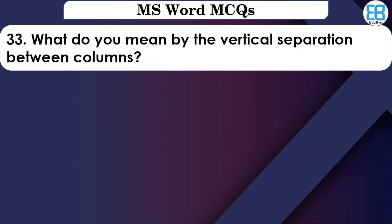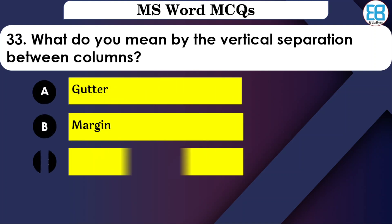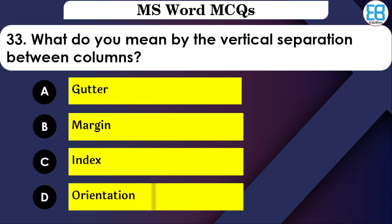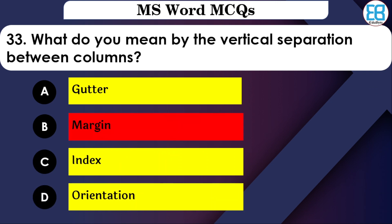What do we call the vertical separation between columns? The options are: Margin, Index, or Orientation. The correct option is Column — the vertical separation between columns is simply called Column.